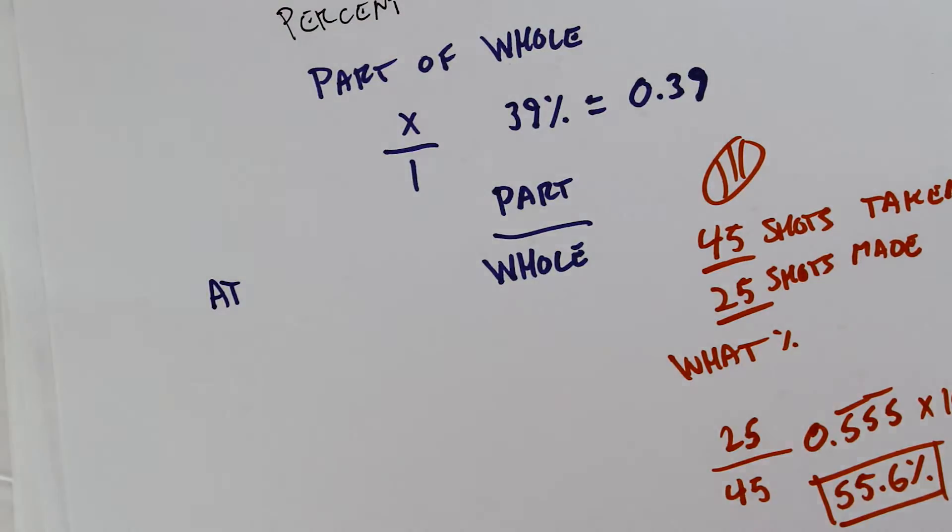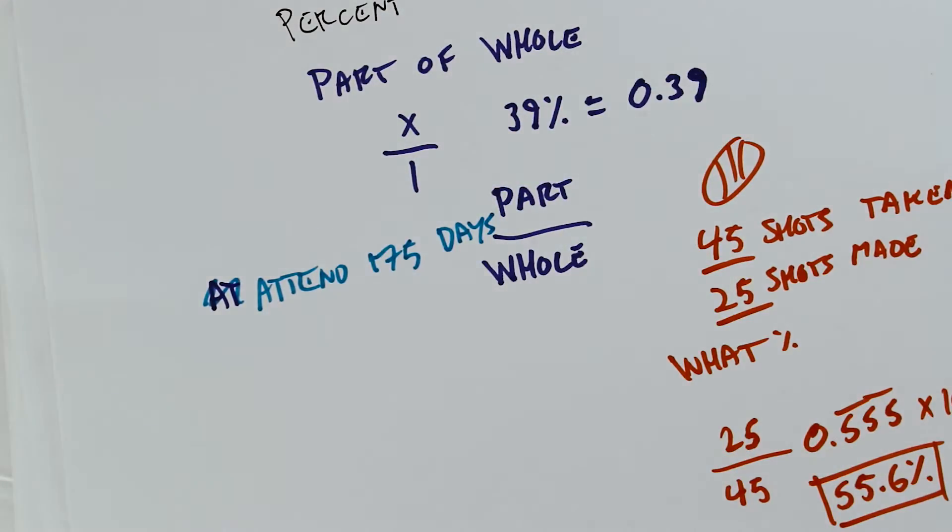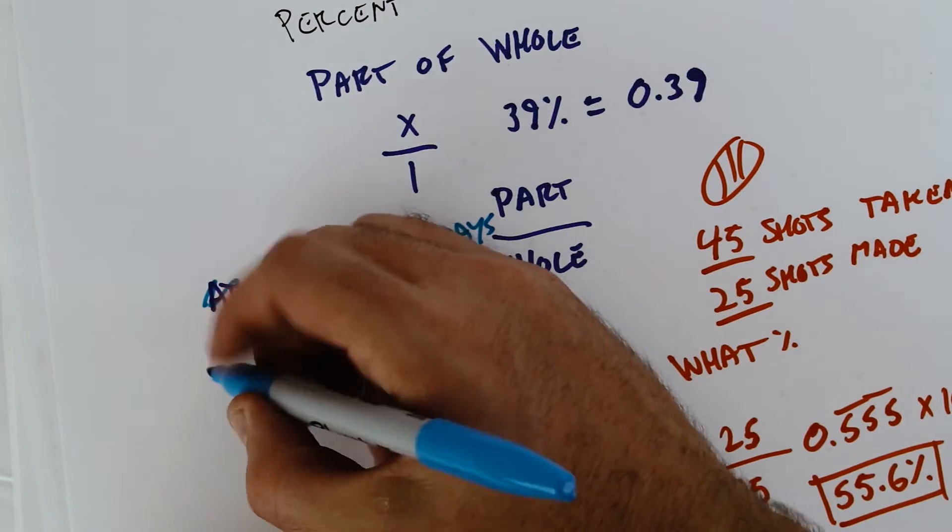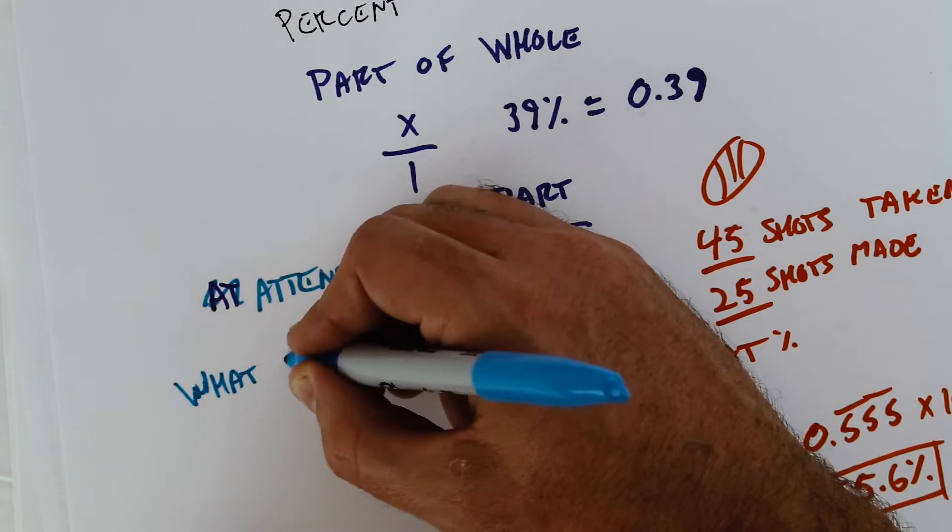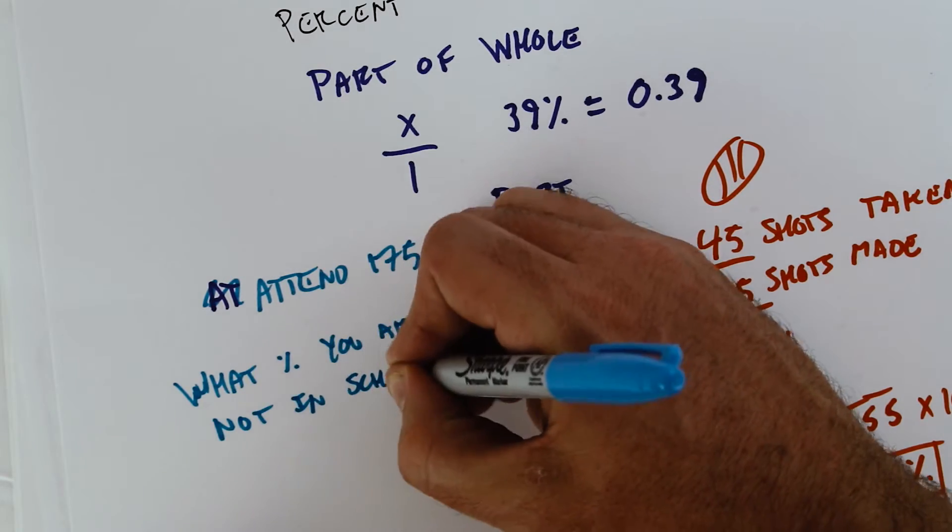So one more quick example. Let's say that you attend school 175 days out of the year. And we want to know what percent you are not in school. So out of the whole year, what percent are you not in school?